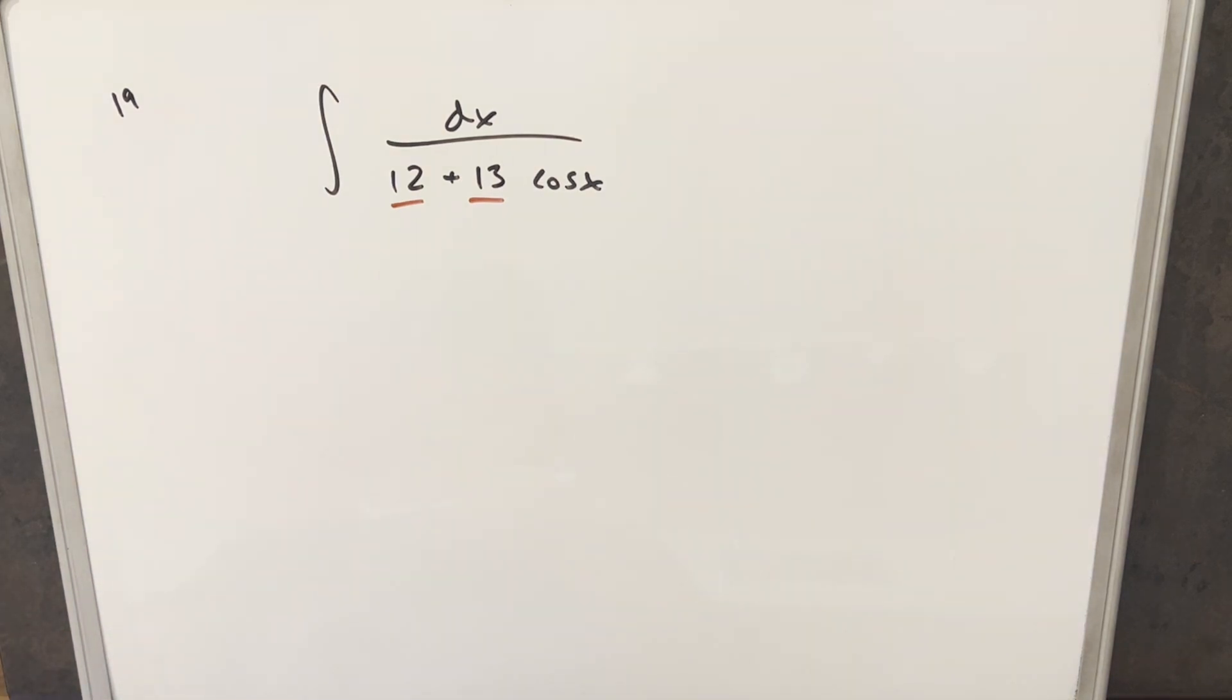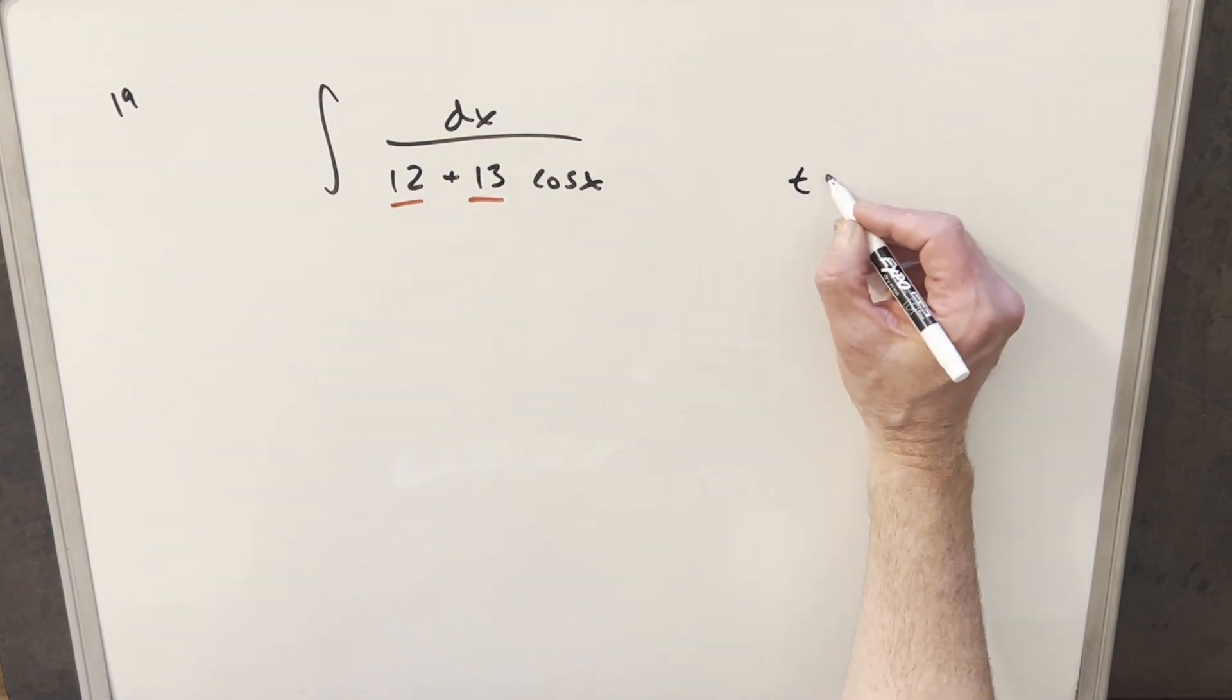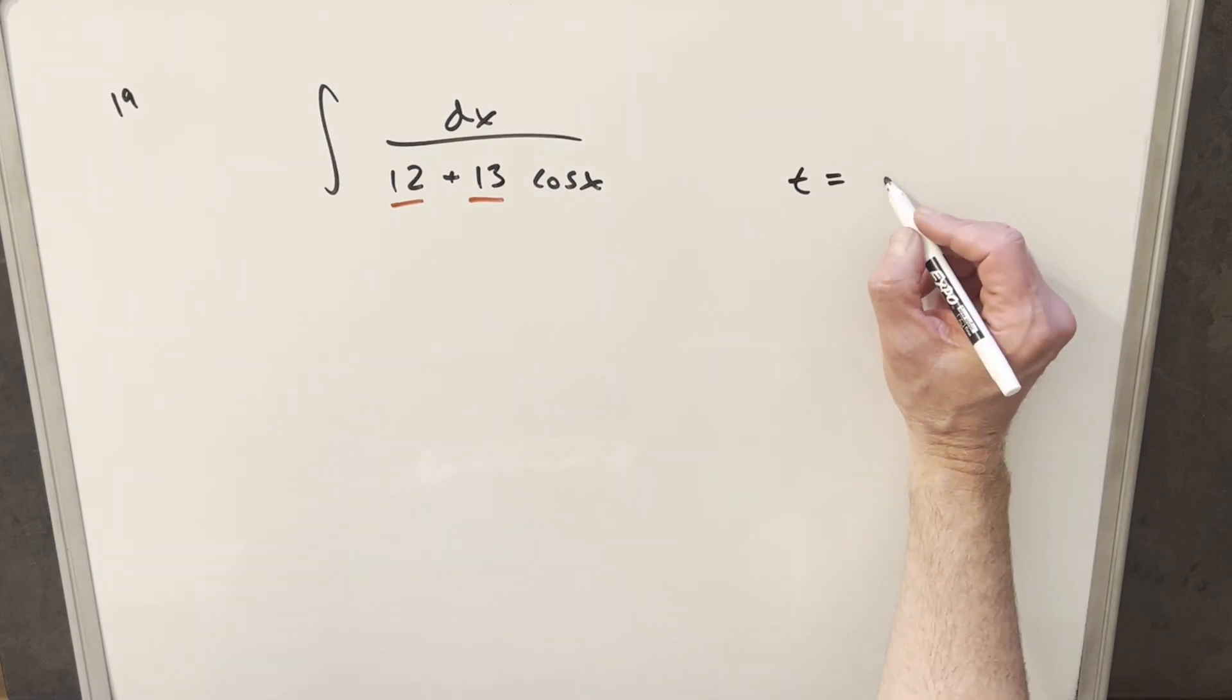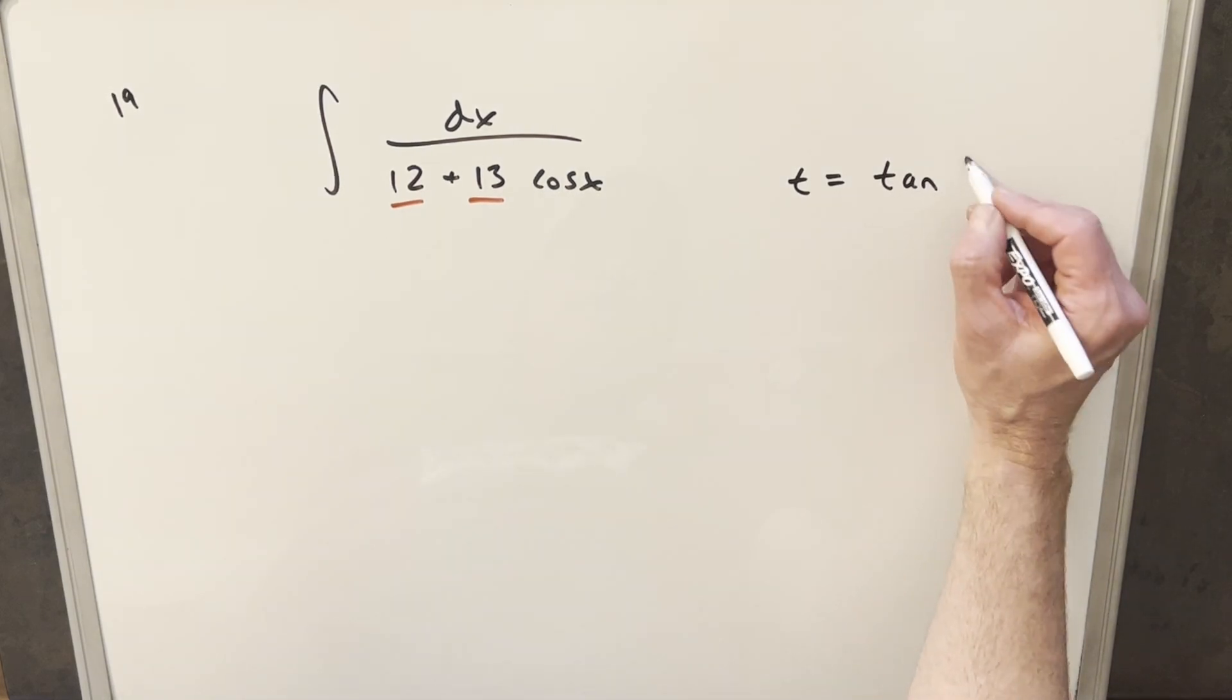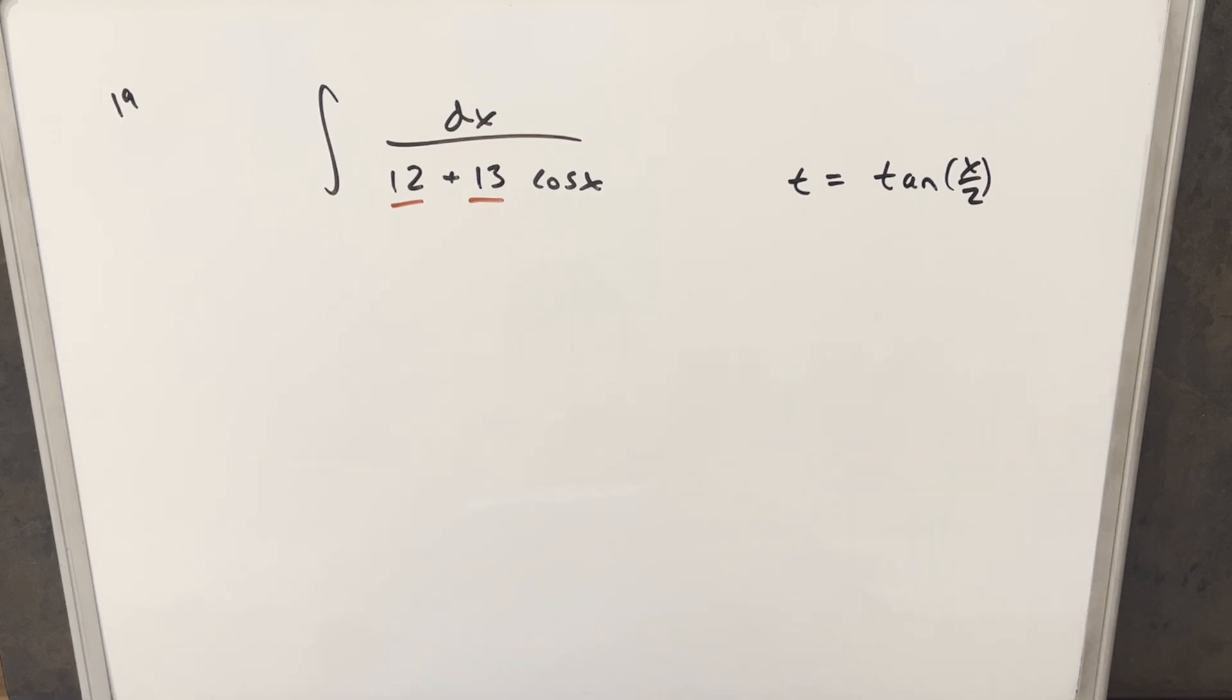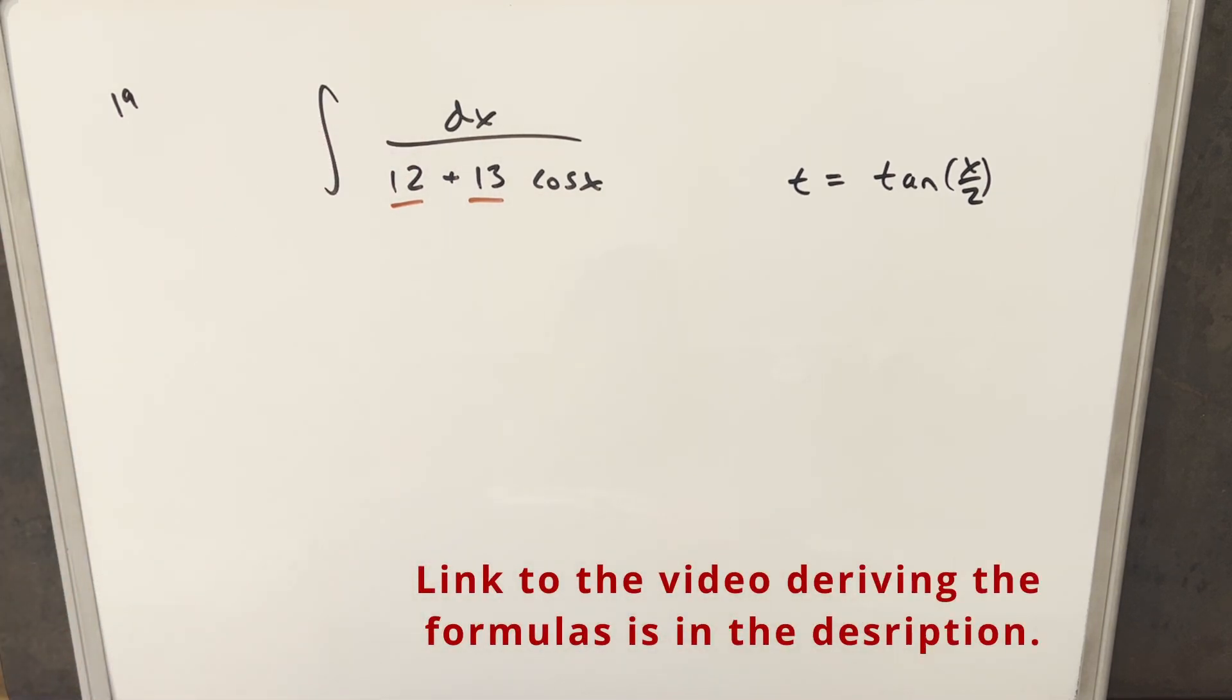So I think what I want to do in this case is a half angle substitution. What I'm going to do for this is I'm going to make my substitution. We'll use t, and we'll set t equal to tan x over 2. This seems like a pretty strange substitution. In a previous video, I derived all the formulas. What we really want to do is we want to get a value for cosine x to plug in here, and we're going to need a value for dx.